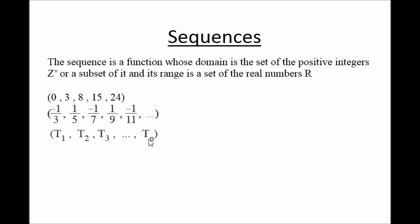In this video we have algebra for secondary 2, with examples on sequences. A simple sequence like 0, 3, 8, 15, 24 is a finite sequence because the number of terms is finite. Another example: negative 1/3, 1/5, negative 1/7, and so on — this is an infinite sequence because it has an infinite number of terms. Each term in a sequence has an order.